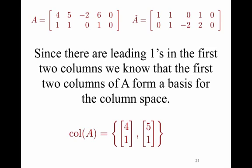The columns that could be eradicated are the ones you can combine together to get rid of. So this tells me that the first column and the second column of my original matrix form a basis. The column space of A has a basis of [4, 1] and [5, 1] — the first two columns of A.